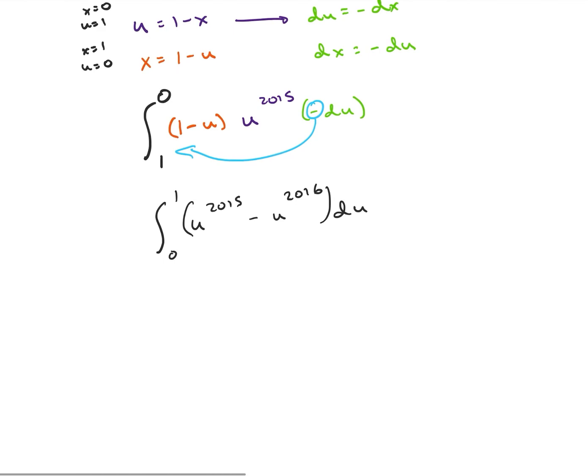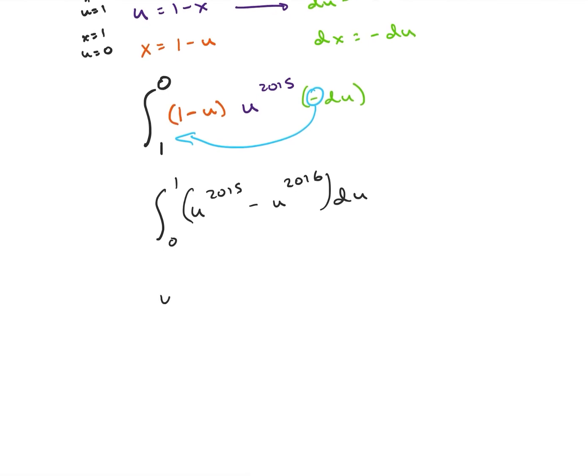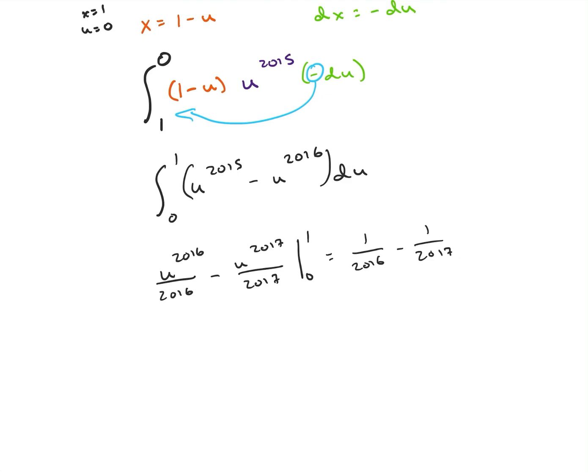All right, and this is pretty straightforward to solve. We're going to get u to the 2016 over 2016 minus u to the 2017 over 2017 evaluated from 0 to 1, which is going to be 1 over 2016 minus 1 over 2017. That's going to be our answer.